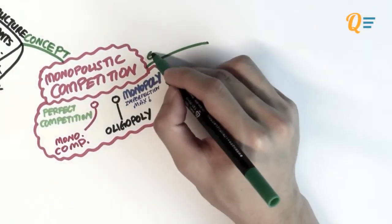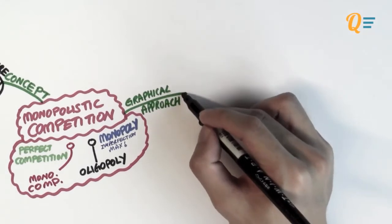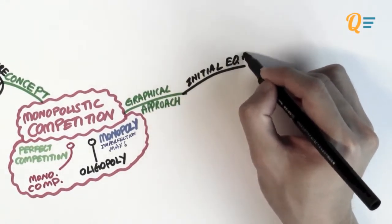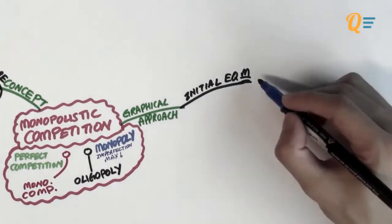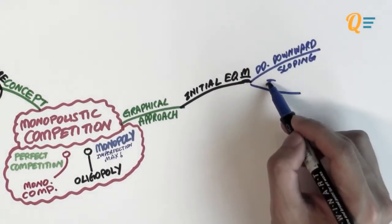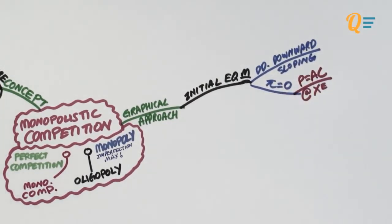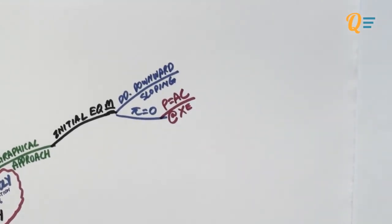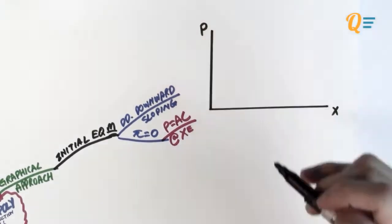Now that we've understood the theory behind monopolistic competition, let's talk about the graphical approach and how we analyze it using graphs. For the initial equilibrium, you need a downward sloping demand curve as discussed in the market structure determinants. You also need to make sure the firm is making zero profits in the long run, which means price equals average cost at the equilibrium quantity.